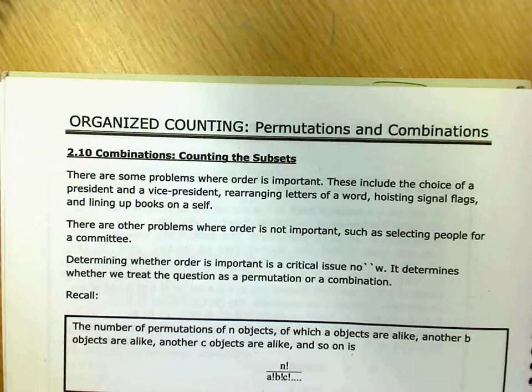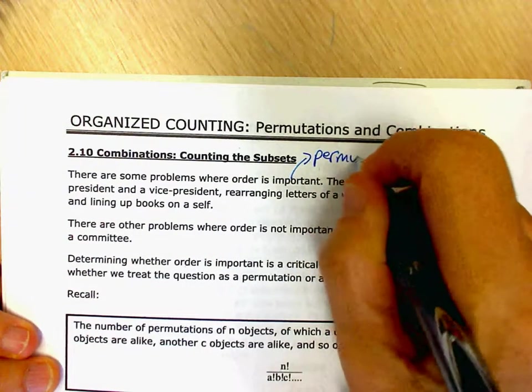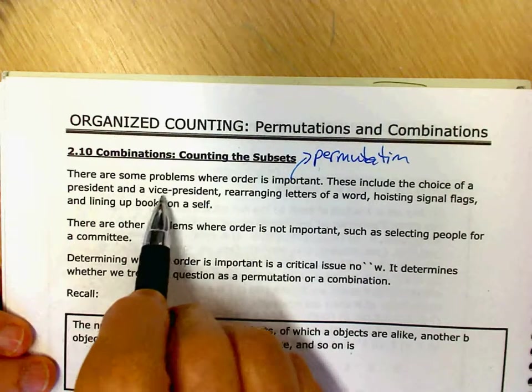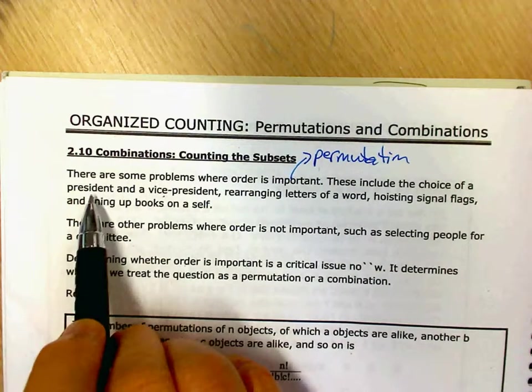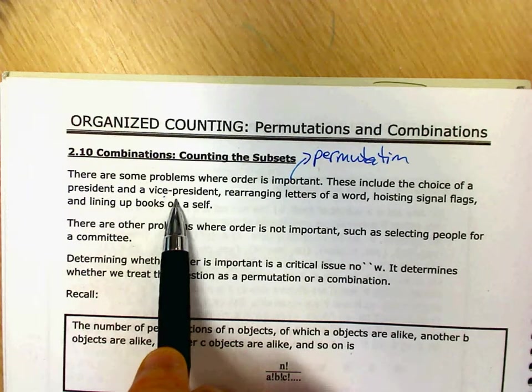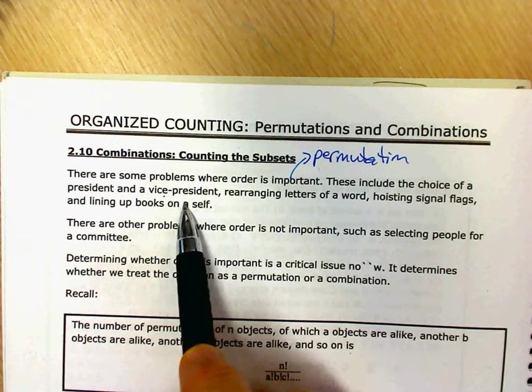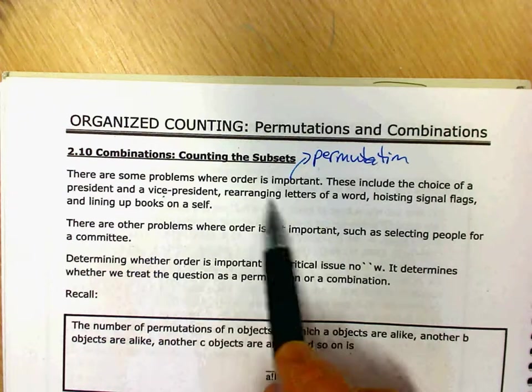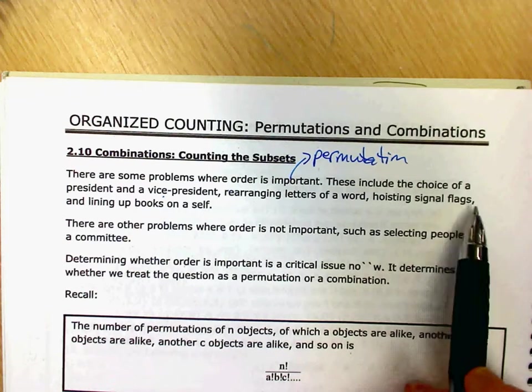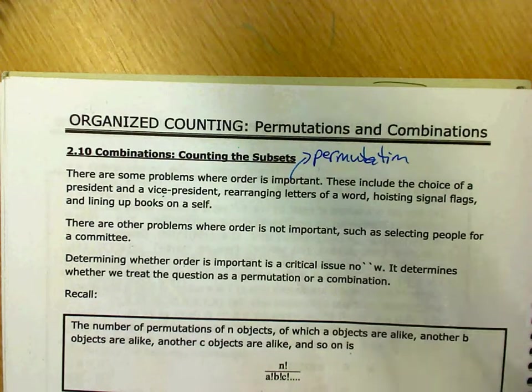Okay, there are some problems where order is important. So you know that's called a permutation. These include the choice of a president and a vice president because it makes a difference if Jennifer is a president and Adrian is a vice president or if Adrian is the president and Jennifer is the vice president. Rearranging letters of a word. Hosting signal flags. Different orders of signal flags mean something different. Lining up books on a shelf.